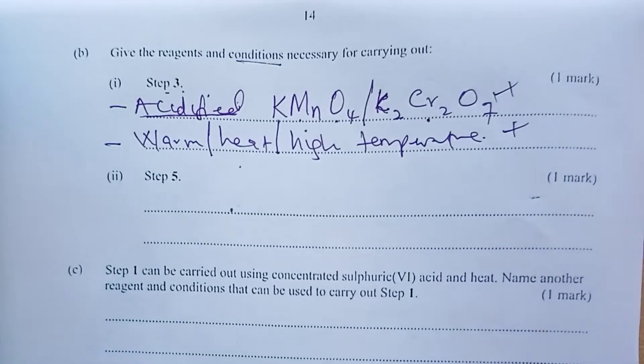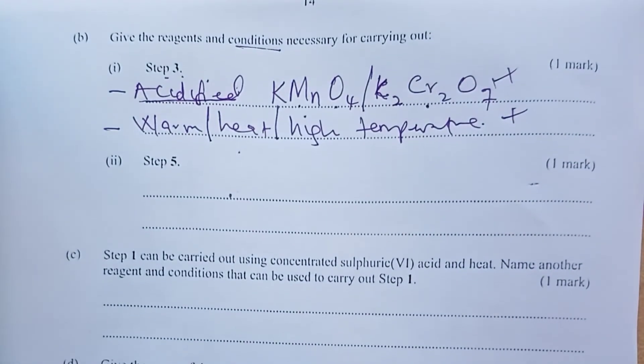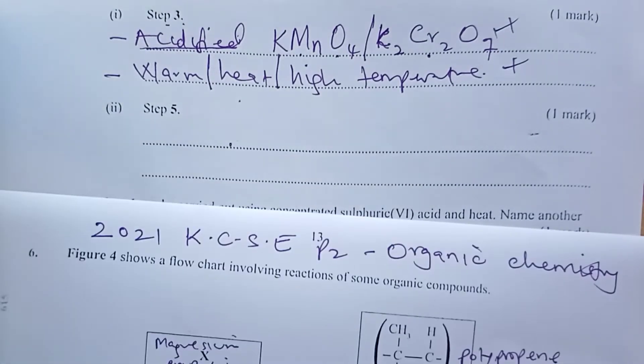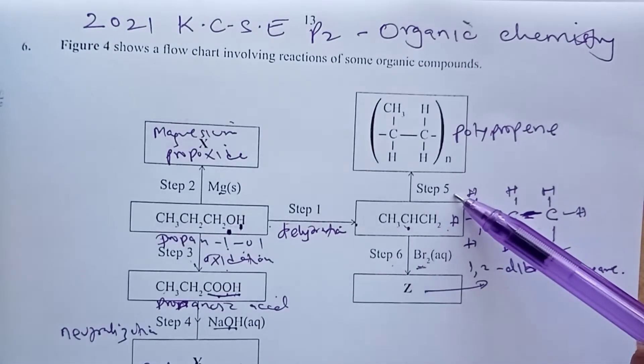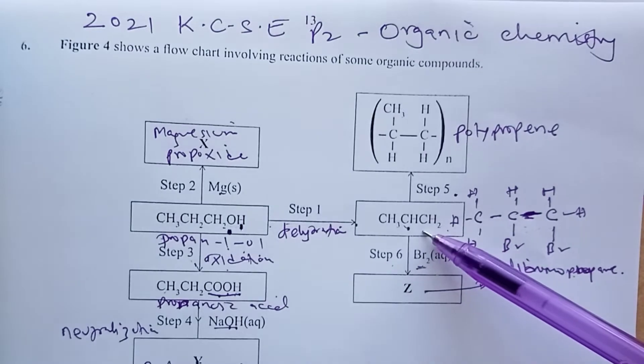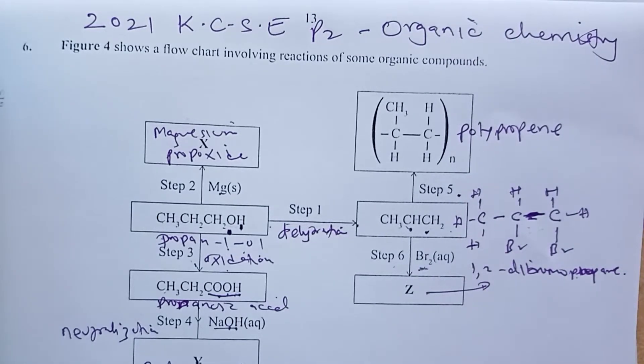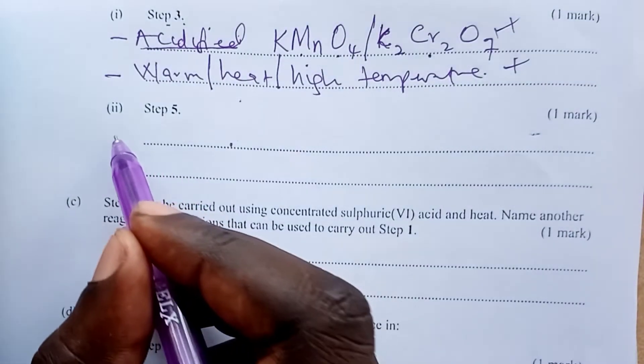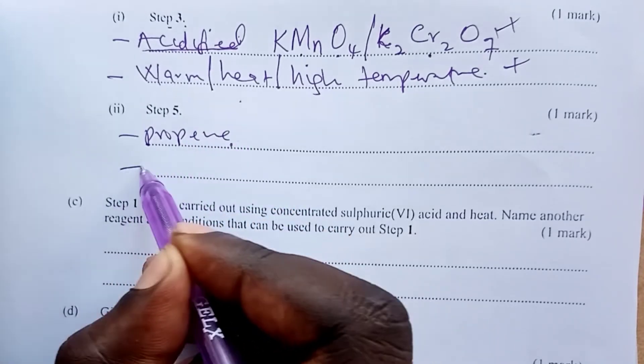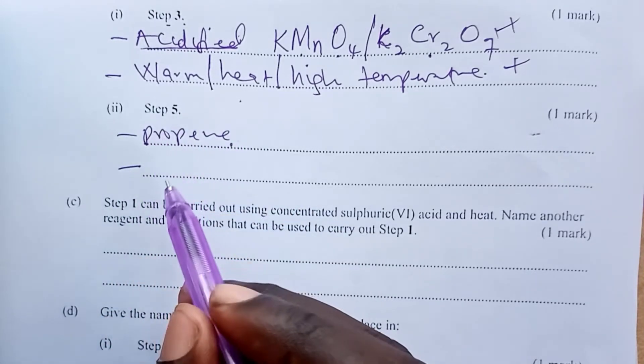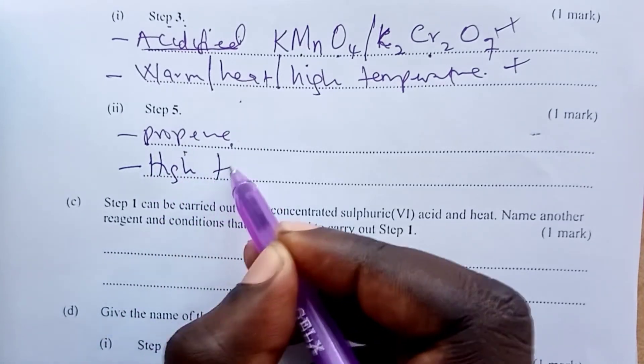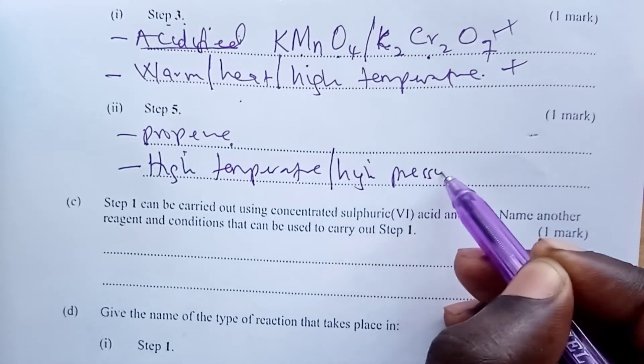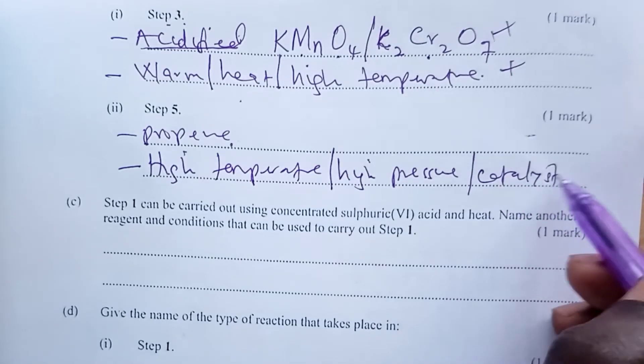So each of these is half mark for one mark to that question. Step five—conditions and reagents: where is step five? Step five, we are carrying out polymerization on propene to get polypropene. So obviously the reagent has to be propene. What about the condition? Conditions are many here. We can talk about high temperature. We can talk about high pressure. We can also talk about catalyst. And here, please, you don't have to specify, just leave them the way they are.